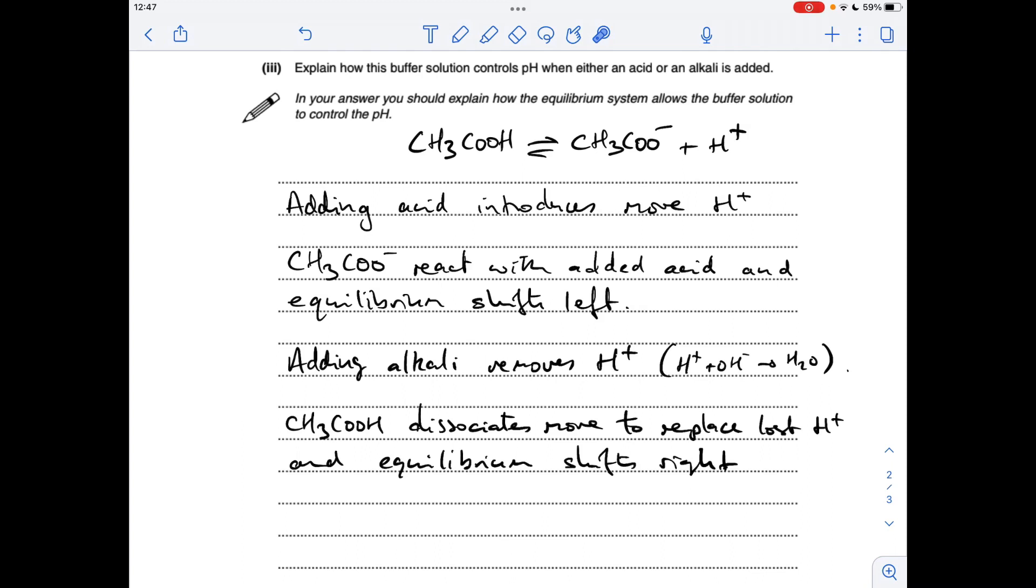So moving on to the addition of alkali. So alkali will remove H plus ions. I've got a little equation to back up what I'm saying there. So the OH minus ions will react with the H plus ions to form water. So if you think of the knock-on effect here, this is going to go down. So how does the equilibrium respond? Well, the ethanoic acid, in this case, will dissociate more and just put the H plus ions back. So the equilibrium shifts to the right.